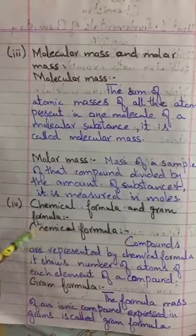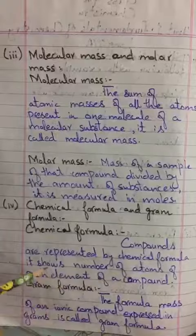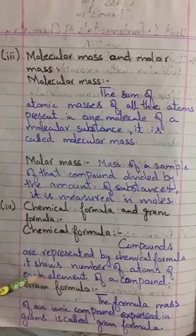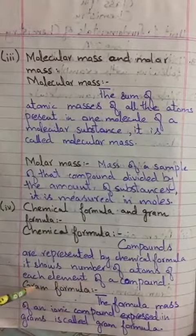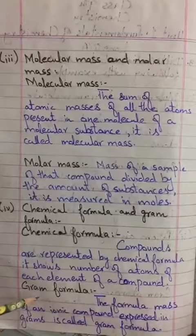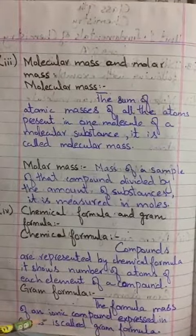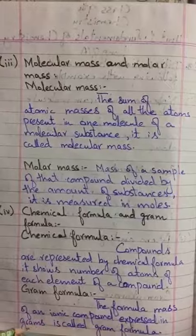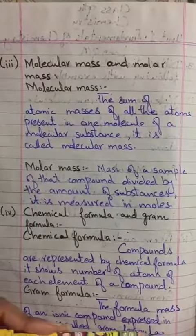Chemical Formula and Gram Formula. Chemical Formula: compounds are represented by chemical formula, it shows number of atoms of each element of a compound. Gram Formula: the formula mass of an ionic compound expressed in grams is called Gram Formula.